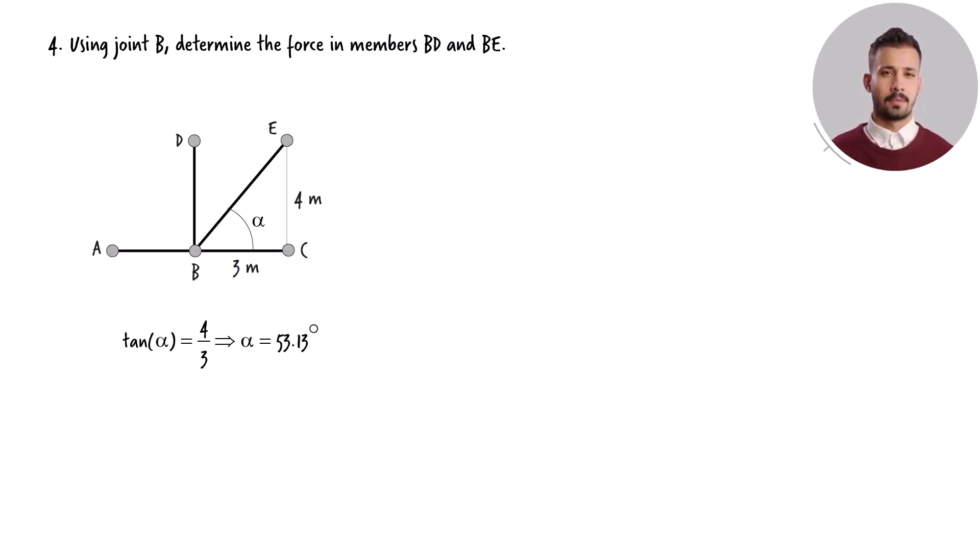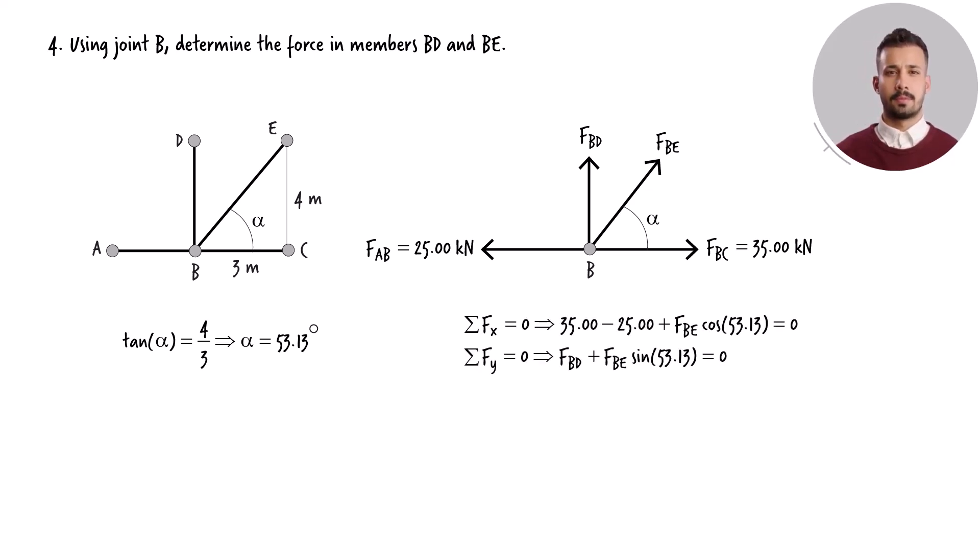Joint B connects four members. The angle between member BE and the horizontal axis has already been established. Here is the free-body diagram of the truss joint. Four forces are involved in the equilibrium equation for this joint. Two of these forces have been determined. Here are the joint equilibrium equations. Solving them for the unknown forces, we get the results.